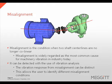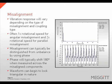Misalignment is the condition when two shaft centerlines are no longer co-linear. It is widely regarded as the most common cause of machinery vibration in industry today. It can be detected with vibration analysis, and the vibration response from misalignment can be very distinct, allowing the user to easily identify different misalignment conditions. The response will vary depending on the type of misalignment and the coupling type.